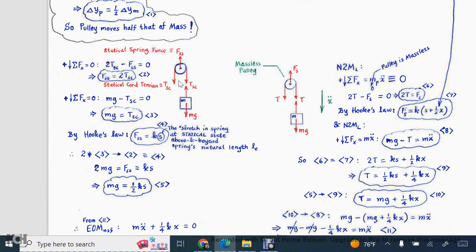So when you multiply this equation 3 by 2 and then sub it into this equation 2, and then you equate that to this last equation from Hooke's law, you'll find that the weight is one half of the k times s. So that is my equation 5.